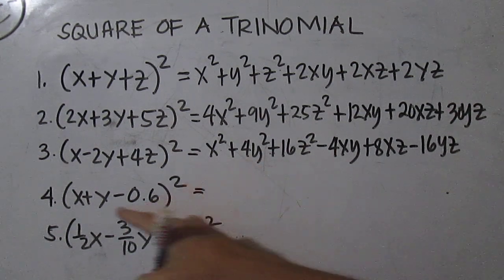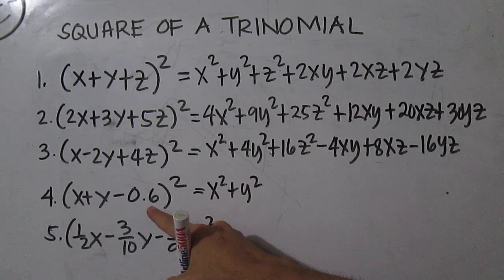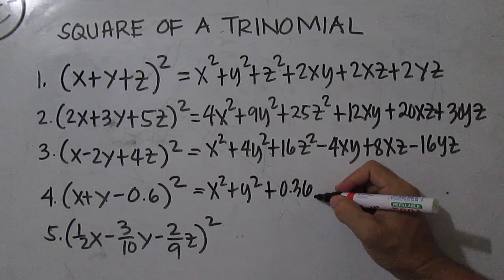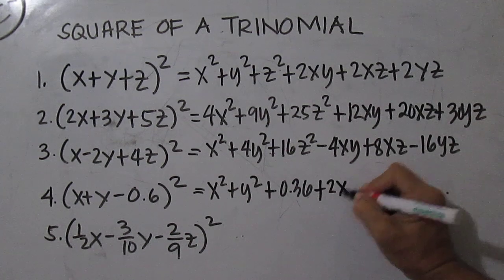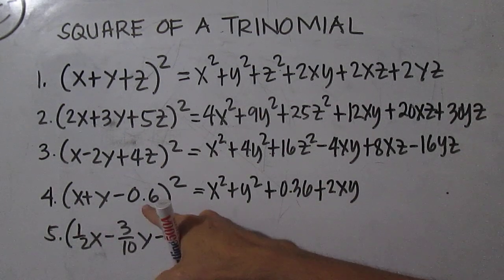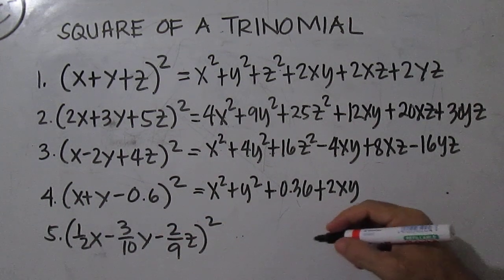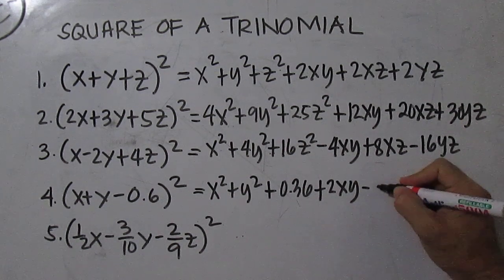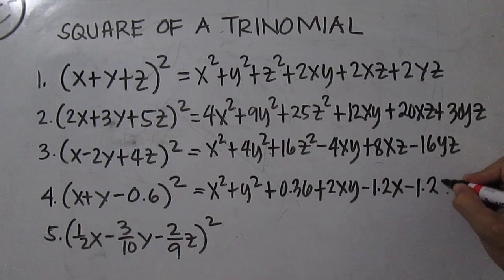For number 4, you have x squared plus y squared. Negative 0.6 times negative 0.6 is 0.36. Then xy times 2 is 2xy. This is negative 0.6 times x is negative 0.6x times 2, you have minus 1.2x. Then you have also minus 1.2y.